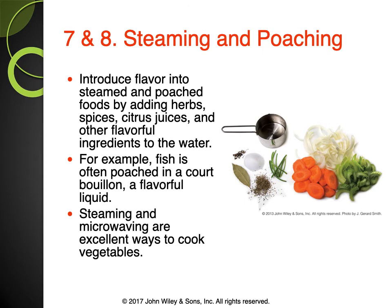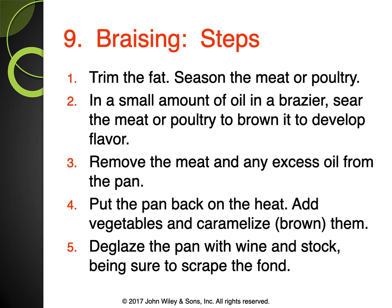Now we get into moist heat cooking methods: steaming and poaching. Steaming uses boiling water below a compartment so the steam rises through. Poaching is around 165–170°F — just starting to see little bubbles come up, lower than a simmer. Simmering is around 185°F and boiling is around 212°F. The only way to truly know the difference is to see it.